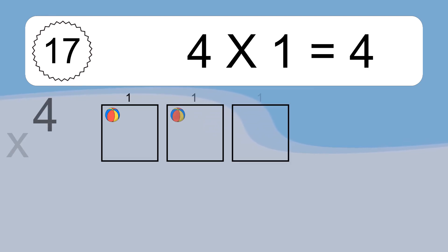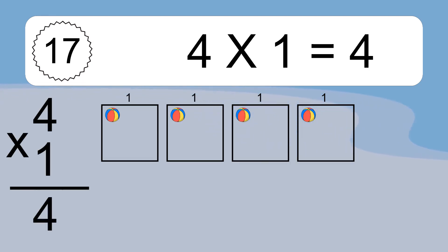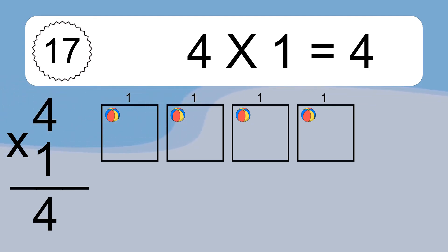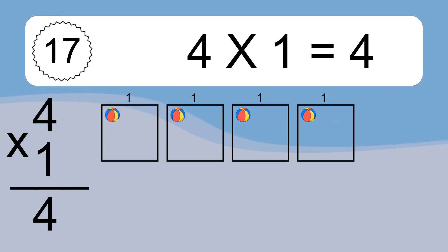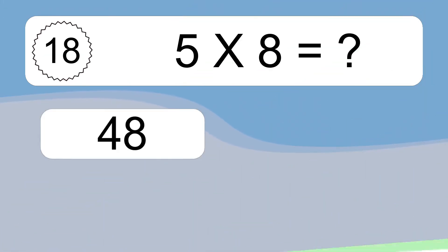Four times one equals what? Four times one equals four. We have four boxes, and each box has one colorful ball inside. If you count all the balls in all the boxes together, you will have four times one balls. This equals four balls.